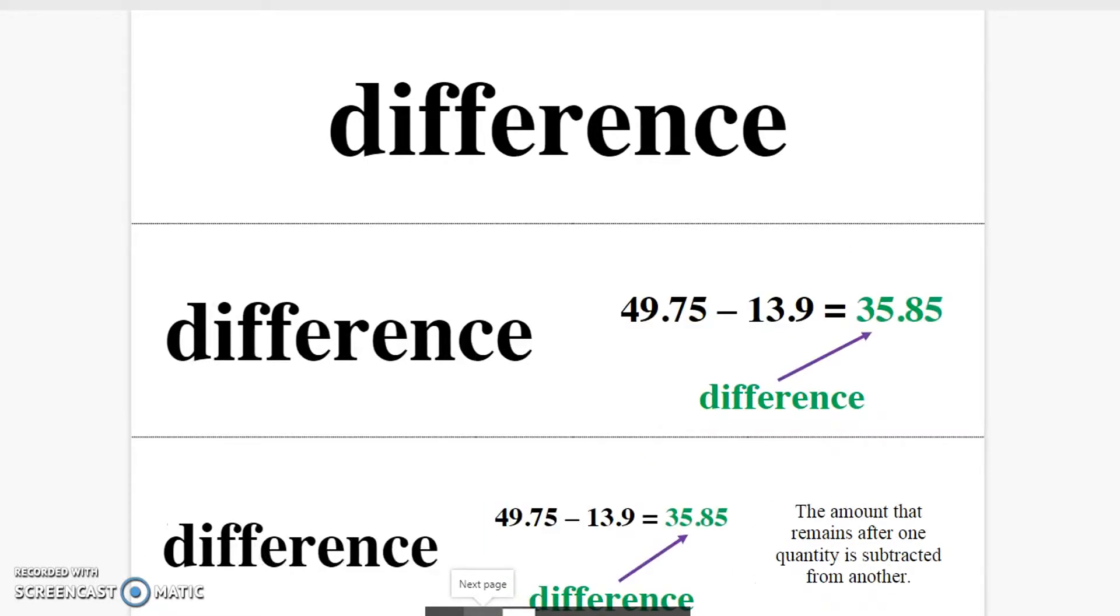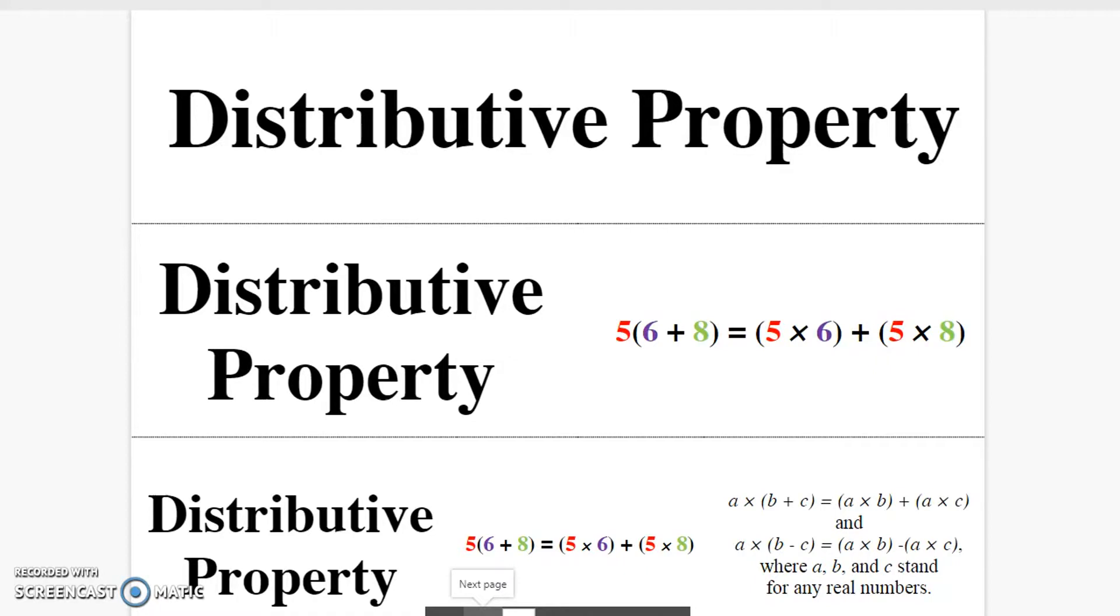Difference. The amount that remains after one quantity is subtracted from another. Distributive property. Where A, B, and C stand for real numbers, they may be distributed to each number inside the parentheses.